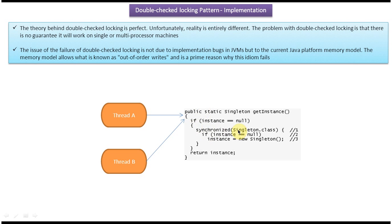Theoretically, this double-check locking pattern is perfect with no issues. But unfortunately, in reality it is entirely different. The double-check locking design pattern has no guarantee it will work on single or multiprocessor machines. The reason it won't work is not because of JVM behavior per se, but because of the JVM memory model design. There is one problem called out-of-order writes, which is the prime reason behind the failure of this pattern. This is why double-check locking is also called an anti-pattern.